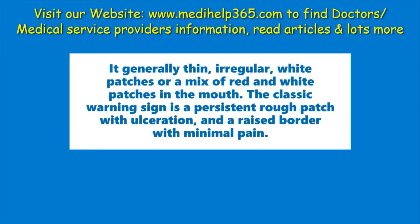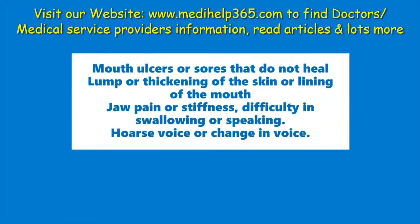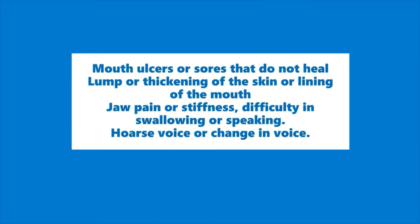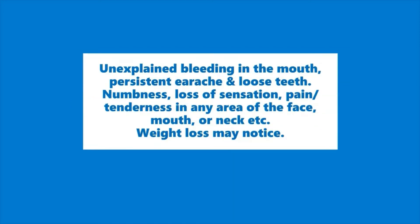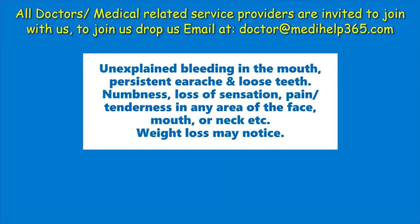Symptoms generally include thin irregular white patches, or a mix of red and white patches in the mouth. The classic warning sign is a persistent rough patch with ulceration and a raised border with minimal pain. Other signs include mouth ulcers or sores that do not heal, lump or thickening of the skin or lining of the mouth, jaw pain or stiffness, difficulty in swallowing or speaking, hoarse voice or change in voice, unexplained bleeding in the mouth, persistent earache, loose teeth, numbness, loss of sensation, and pain or tenderness in any area of the face, mouth, or neck. Weight loss may also be noticed.